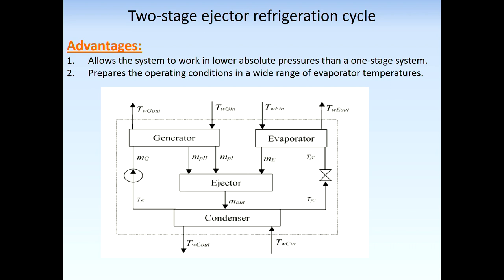The idea here is to use a two-stage ejector for the refrigeration cycle. Unlike common models, this does not mean using two separate ejectors in parallel or series. Instead, an unconventional model is used in which the ejectors are merged into one structure. In the two-stage ejector, the first stage ejector has no diffuser and is connected directly from its constant diameter section to the second ejector.